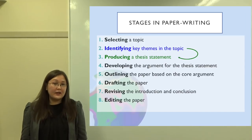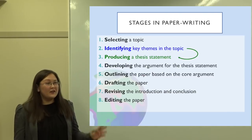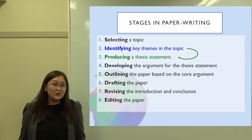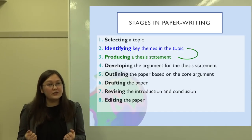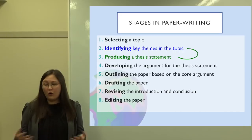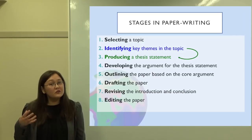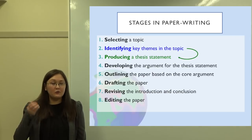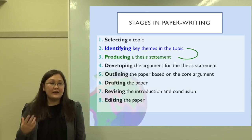The stages in the paper writing process are at this point down to number three: producing a thesis statement. You might be feeling like, wow, we're still only on stage three, but please pay attention because this is really the most important, crucial point. If your thesis statement is weak, the whole paper will not be very good. It's really the foundation you need to build the whole paper. There's no use in writing anything until the thesis statement is good.